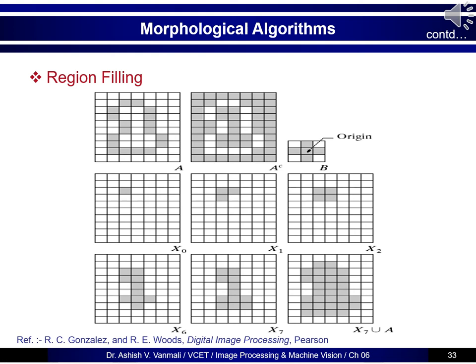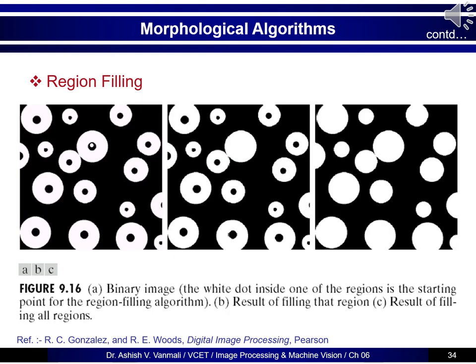Here is an example on actual binary images. In the first image you can see a region to be filled — a big circle with a white dot inside as the starting point. When the algorithm runs, the circle gets filled. We can select starting points in multiple circles simultaneously, and all circles will automatically get filled, as shown in the third image.